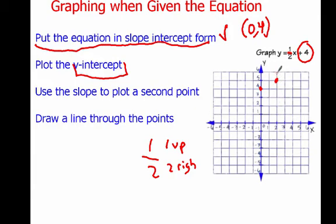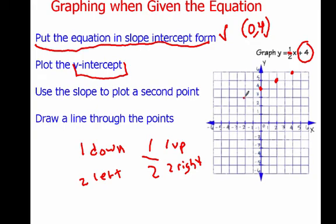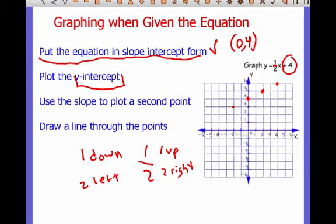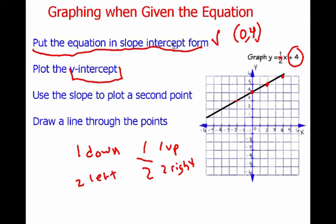We could do another: go up 1 and 2 right to get 4, 6. We could also go 1 down and 2 left, giving us another point. With these dots plotted, all we have to do is draw the line connecting them, and we have our graph. So if given the equation, put it in slope-intercept form, use the y-intercept as our point, and use the slope to come up with another point.